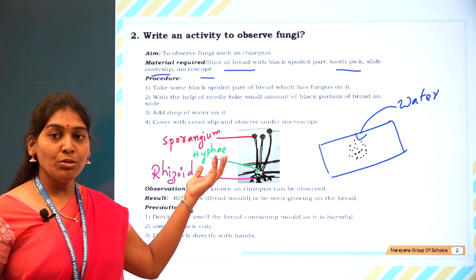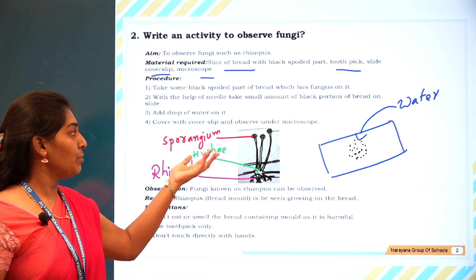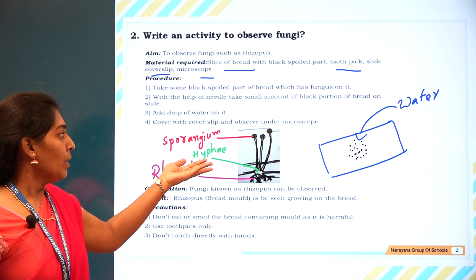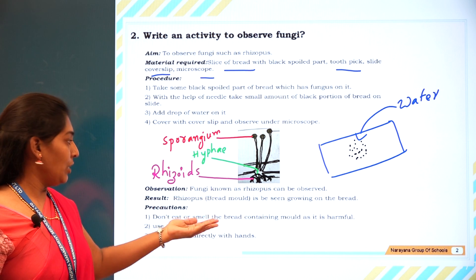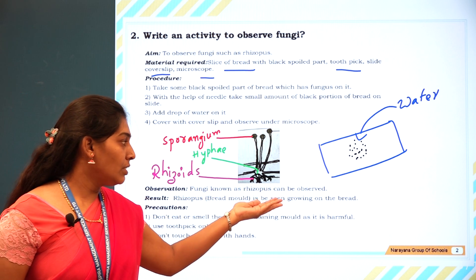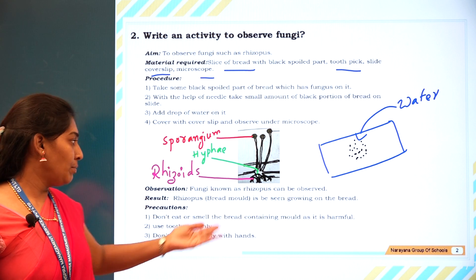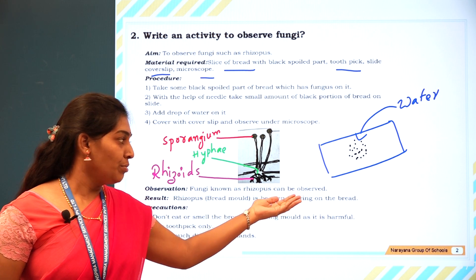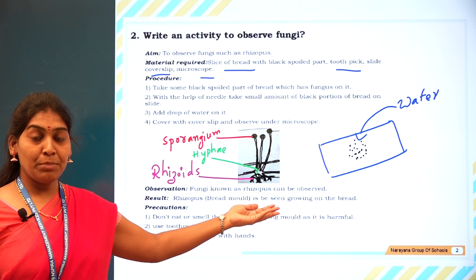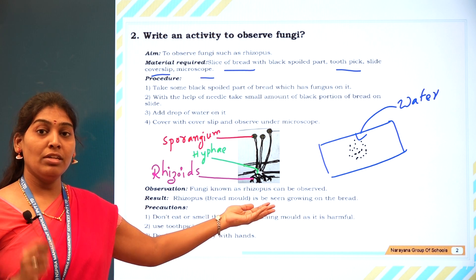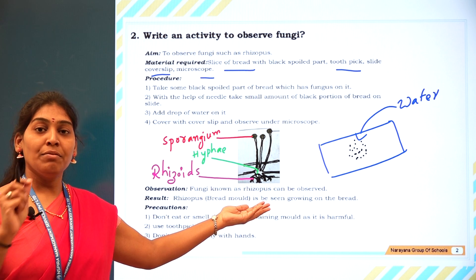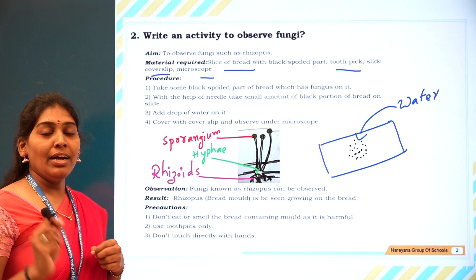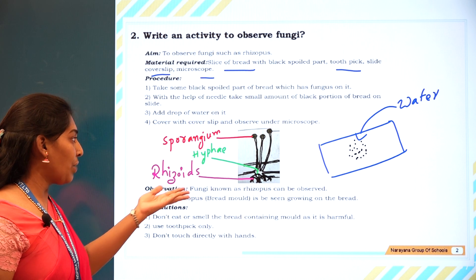This is what Rhizopus, which is present in bread mold, looks like. Observation: the fungi known as Rhizopus has been observed. Result: Rhizopus can be seen growing on the spoiled bread, where the black colour powdery substances appear — that is Rhizopus.